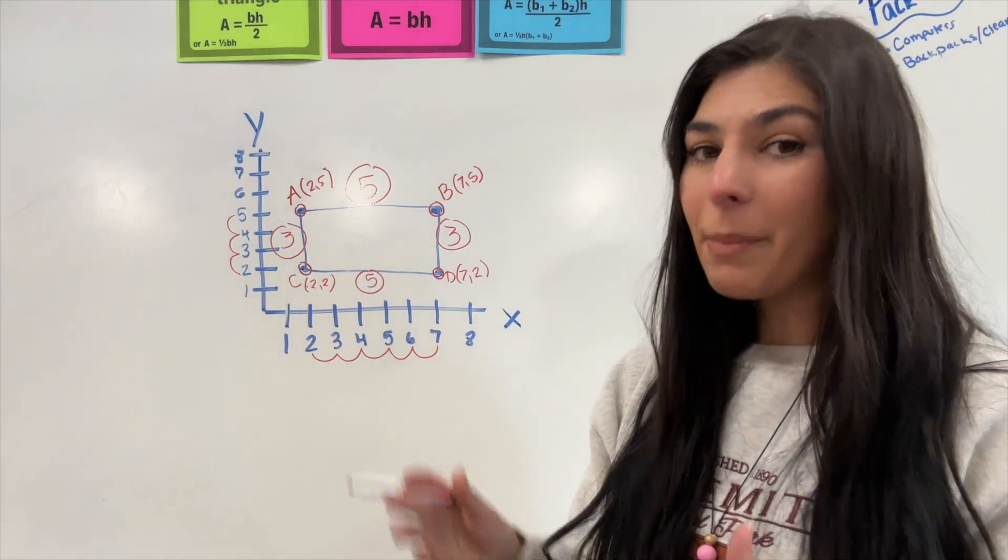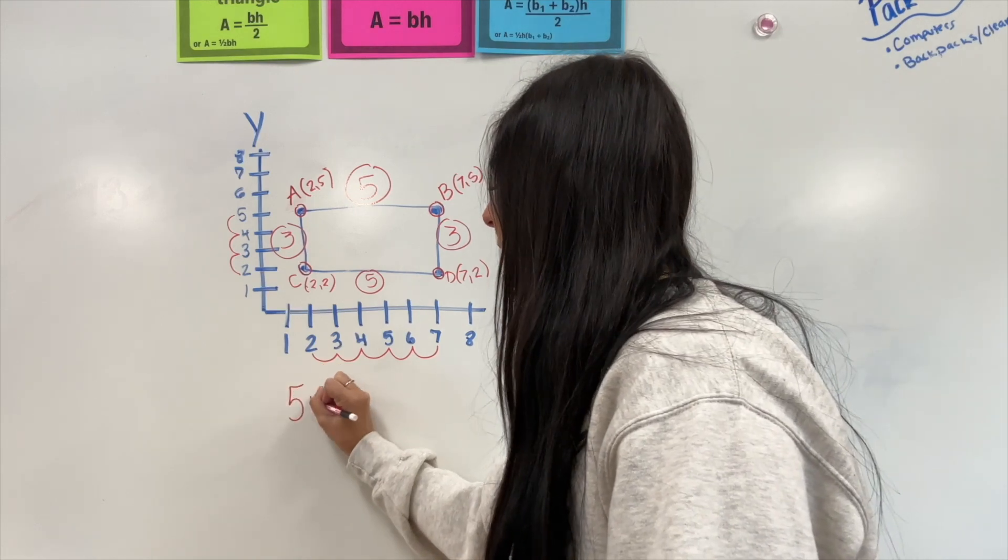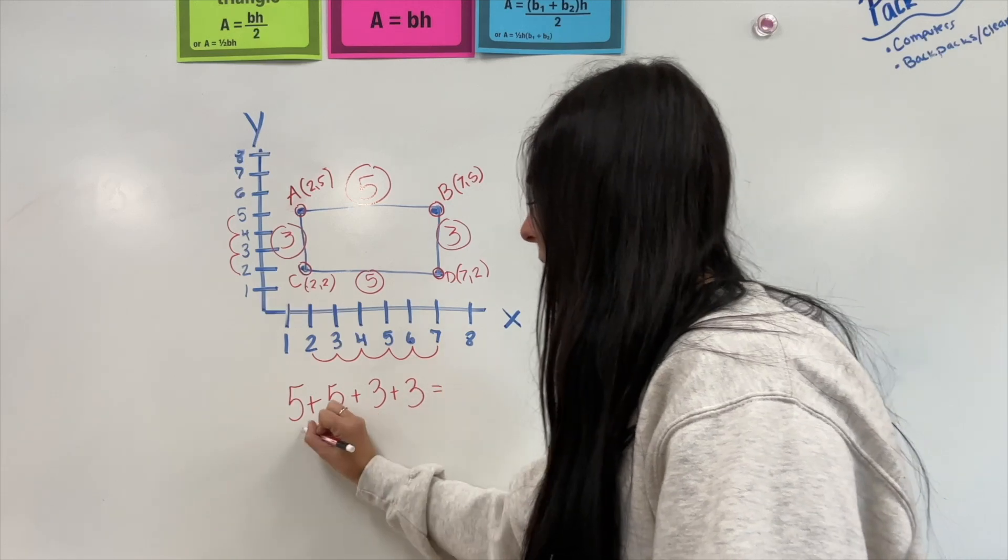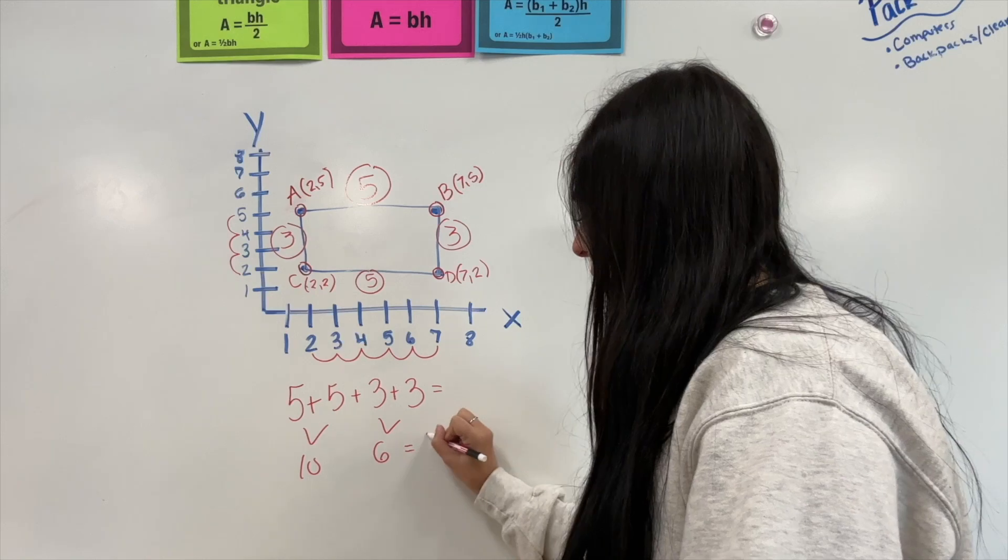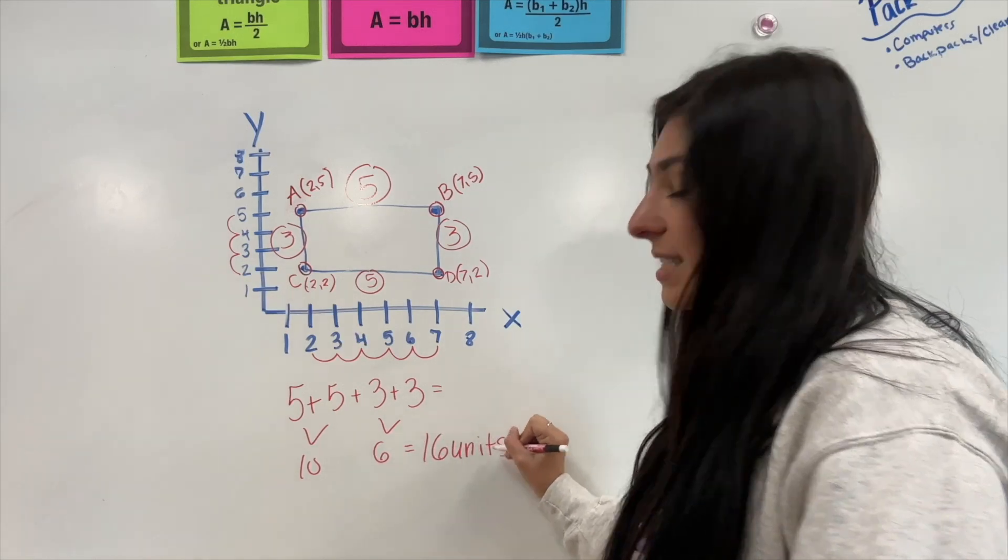Now, to find the perimeter, I'm going to add all four of those numbers up. So, I should have 5 plus 5 plus 3 plus 3. This gives me 10. This gives me 6. So, all together, the perimeter is 16 units.